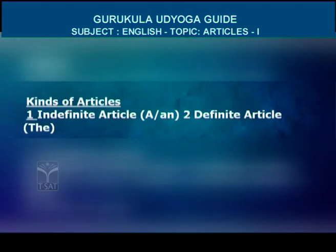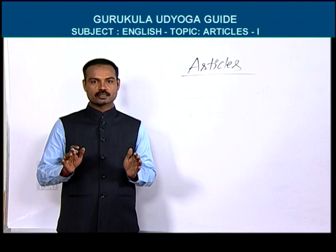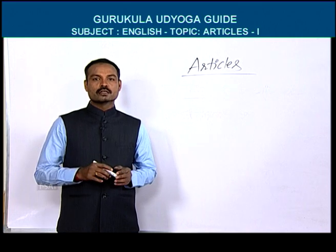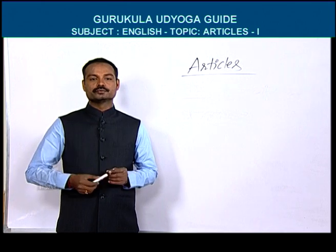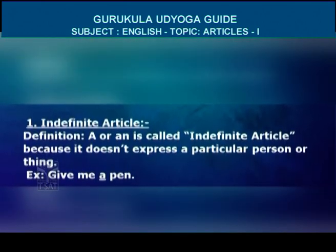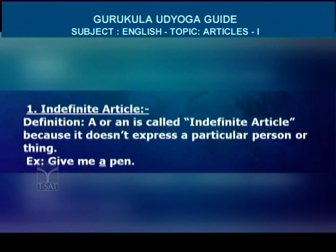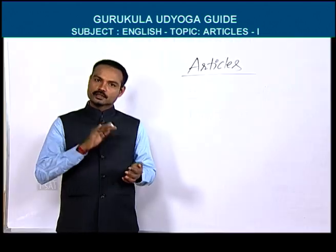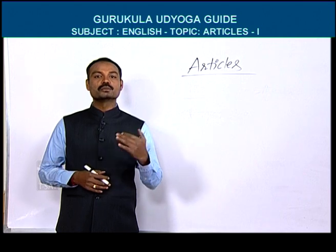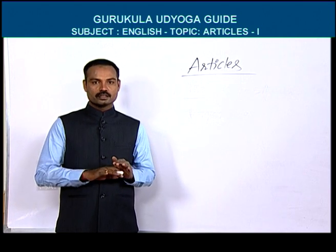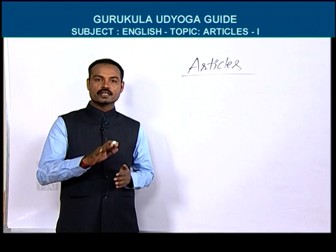A and an are called indefinite articles; the is called definite article. A or an is called indefinite article because it does not express a particular person or thing. The is called definite article because it expresses a particular person or thing.